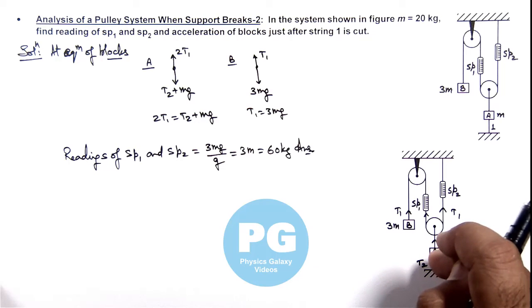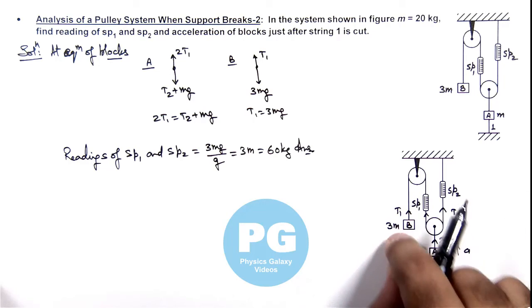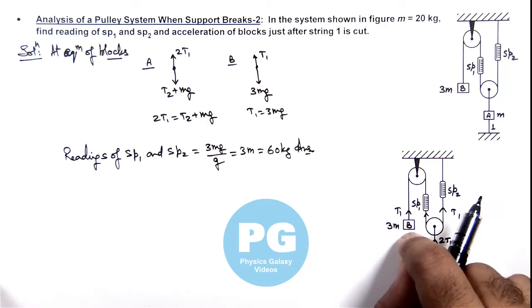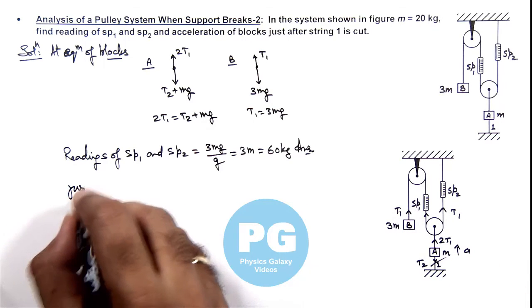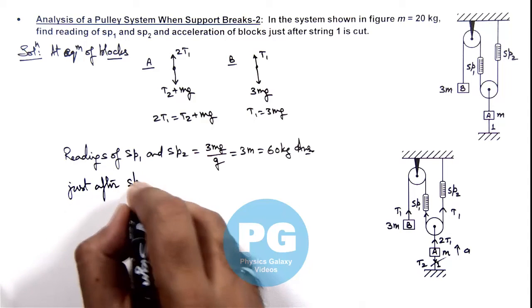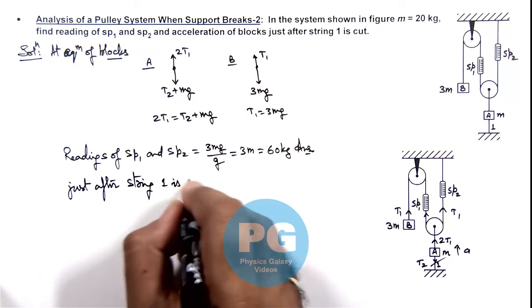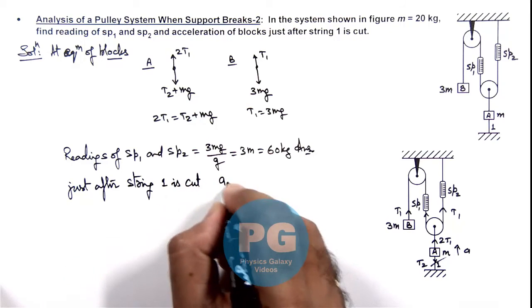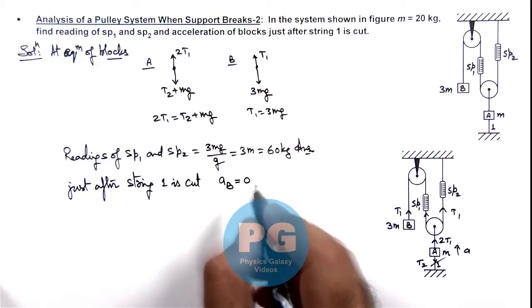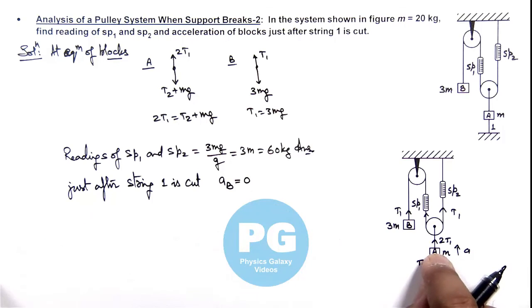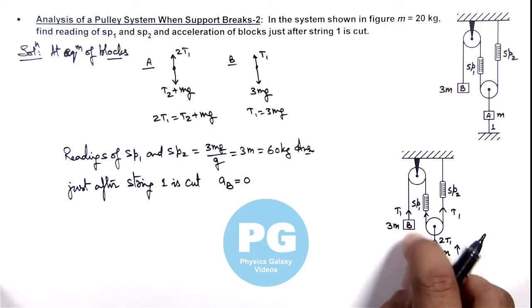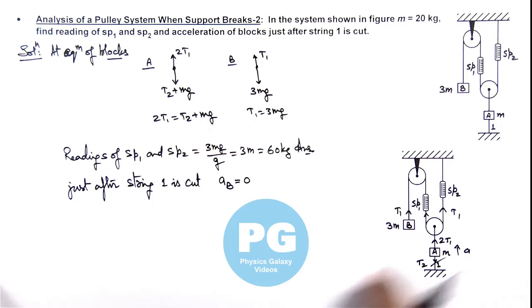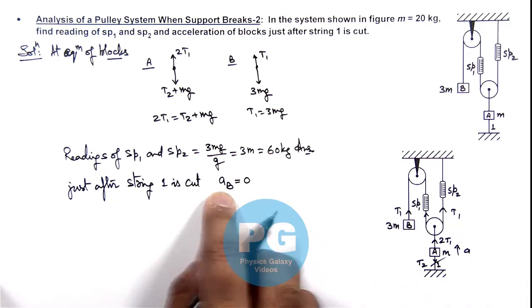And now if we wish to calculate the acceleration of blocks, for block B we can say as this tension remains same initially, the weight and T1 will be balanced for block B. So we can write just after string 1 is cut, acceleration of block B is equal to zero because just when it is cut tension T1 remains same. Block B won't start moving at the initial moment, so its acceleration can be taken as zero.